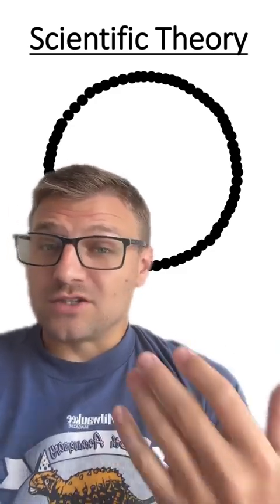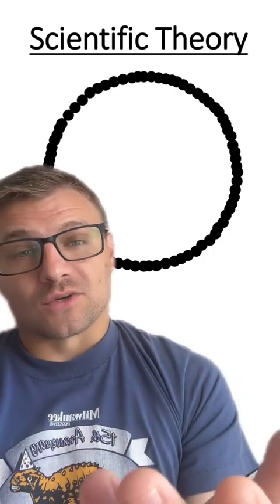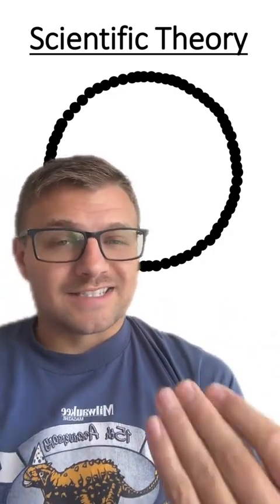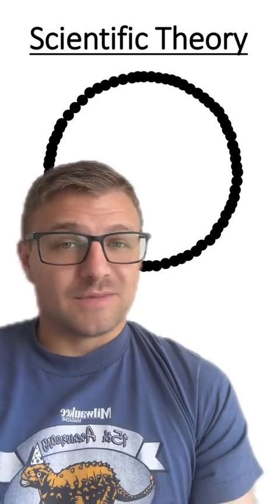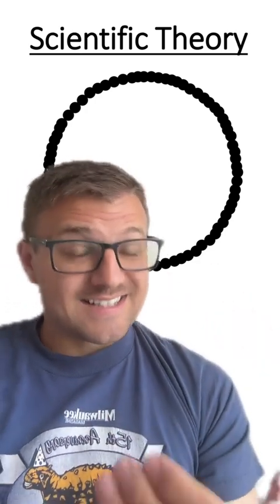But we can't prove this circle. We can say that all the evidence supports this circle. But again, this is what a scientific theory is. You can never prove anything to be true in science. But you can say that all of the evidence supports that it is a circle.